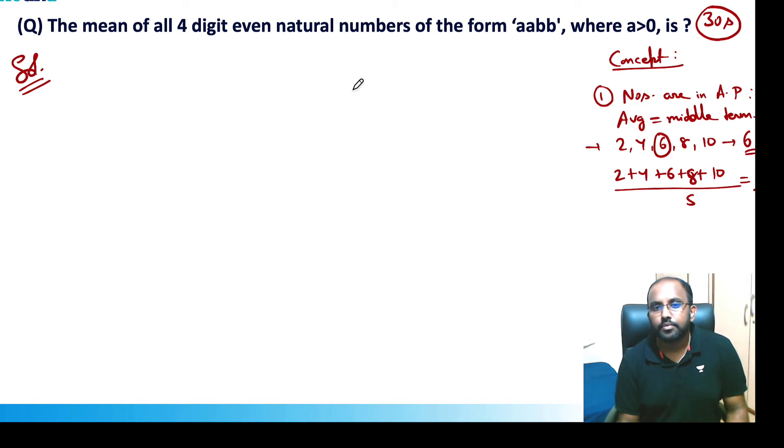Now the second concept: if you want to find the average of numbers in AP from 1 to 9, the sum will be 9 × 10 / 2, which equals 45. So the average of 1 to 9 is 45 / 9, which equals 5.